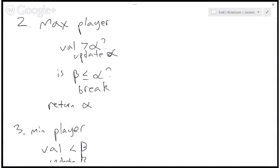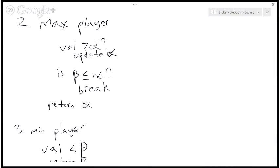The second thing is what the max player will do. When the maximum player gets a value returned from a child, it will check to see if the value is greater than the current alpha it has. If it is, it will update alpha. Next, it will check to see if beta is less than alpha. And if that is, that means we have a pruning condition and we can stop the search at this level and just return alpha as our value to the next level up.